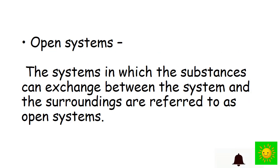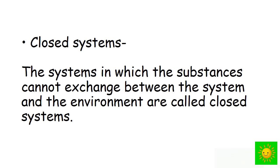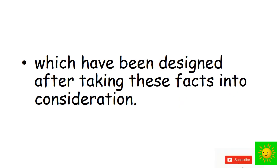Let's see what is an open system. The systems in which substances can exchange between the system and surroundings are referred to as open systems. Closed systems: the systems in which substances cannot exchange between the system and the environment are called closed systems.